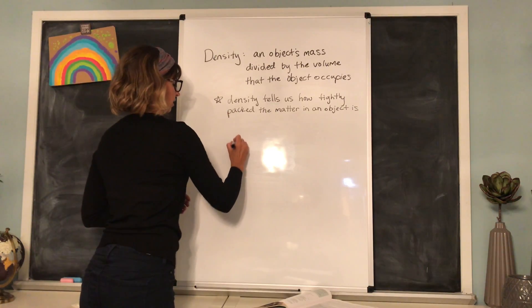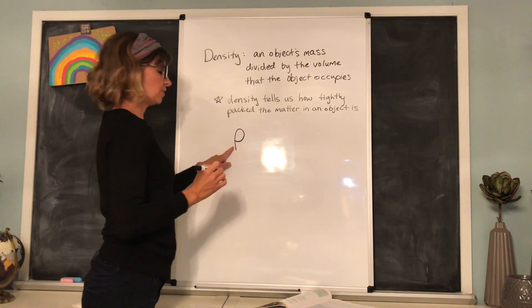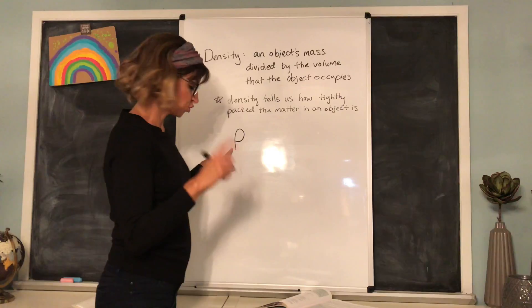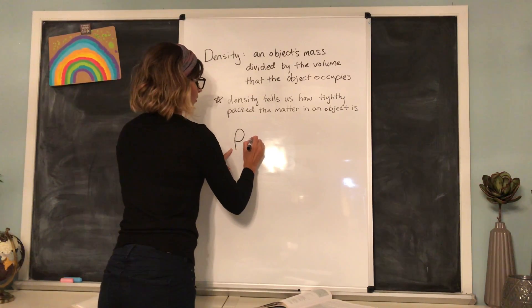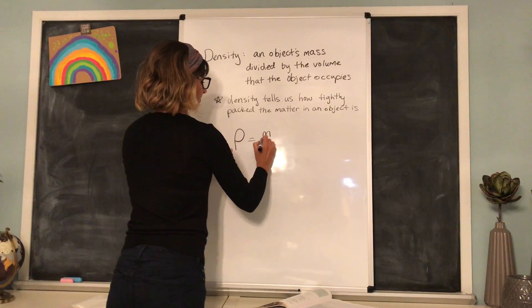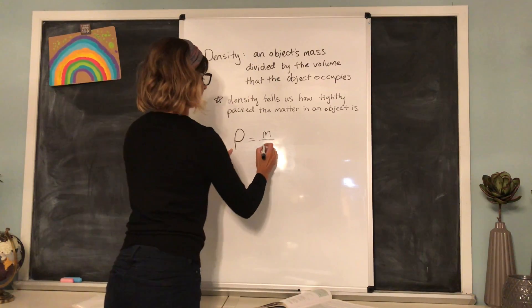Before our example, we're going to need to know the symbol used for density, which is this Greek letter, rho. Rho or the density equals mass divided by volume.